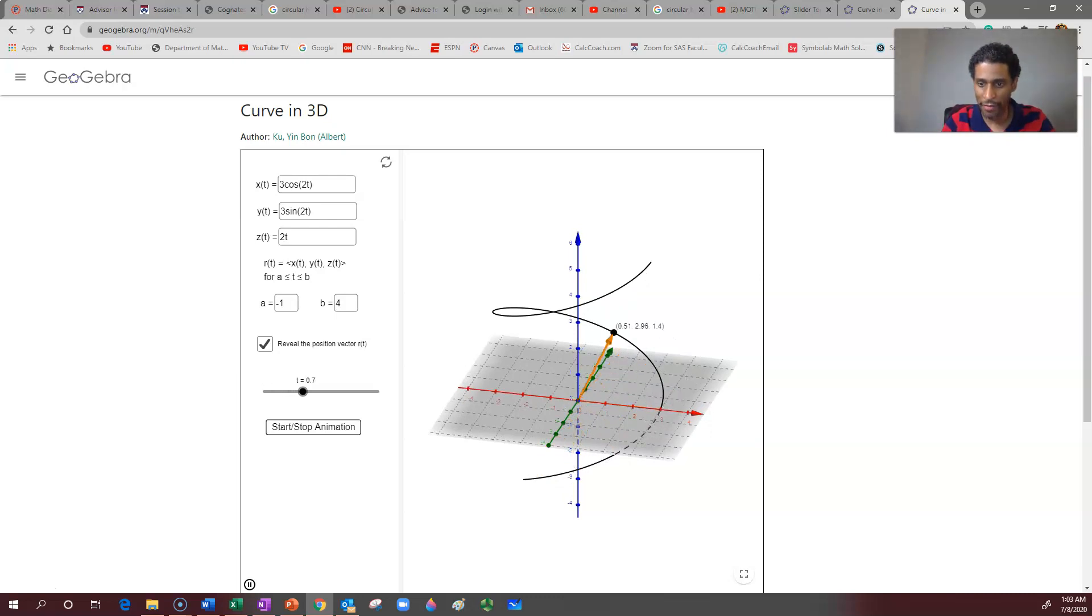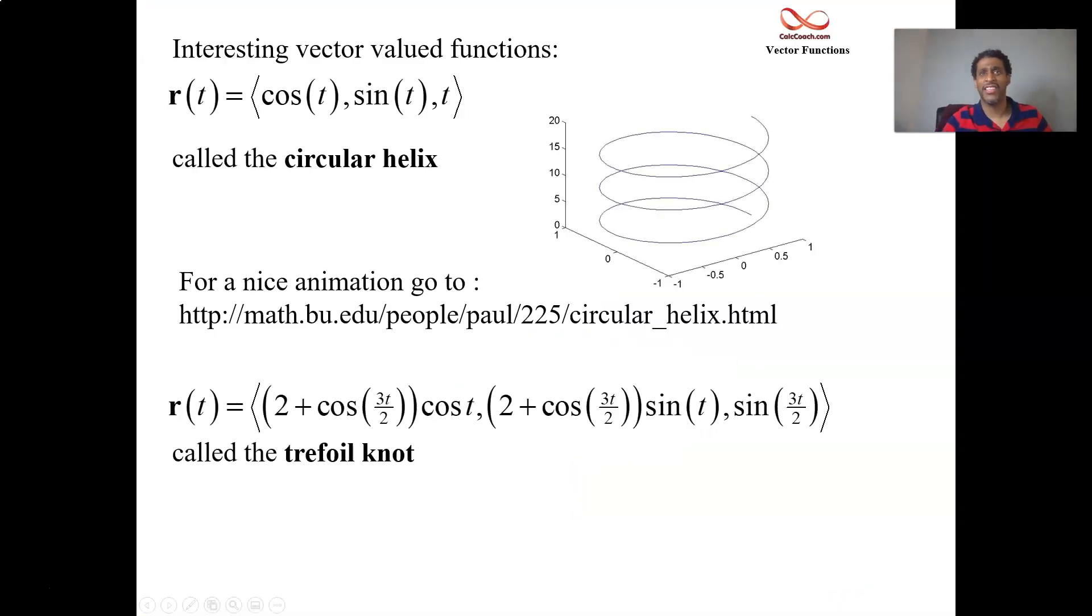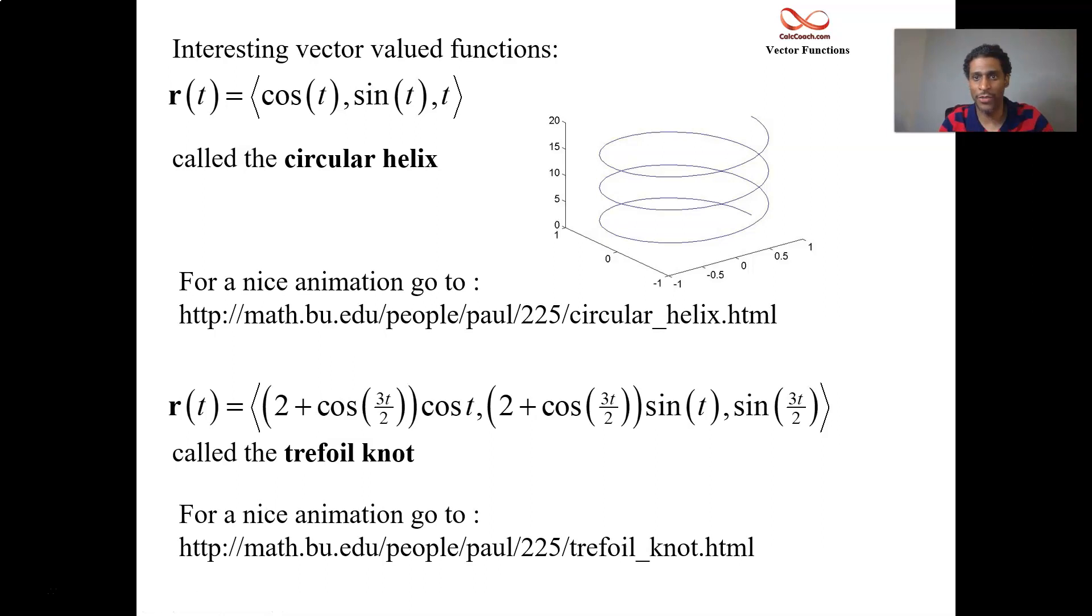Then we have a trefoil knot next. It looks a lot like what we have here. There's a cosine t, there's a sine t, but there's this parenthesis that's multiplied in front of the cosine t and sine t, and it causes a very different action to happen along the curve. Please ignore these websites, they haven't been updated so they don't seem to work. But we have a visual of this one as well.